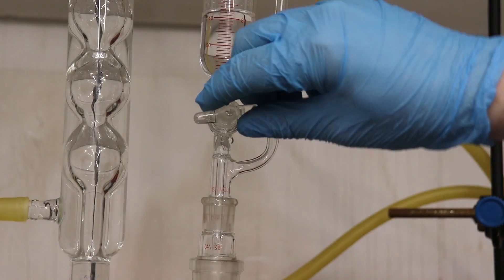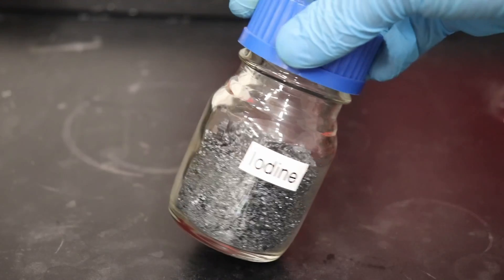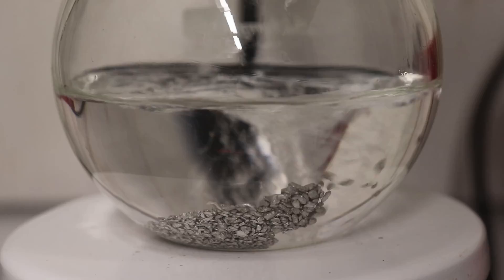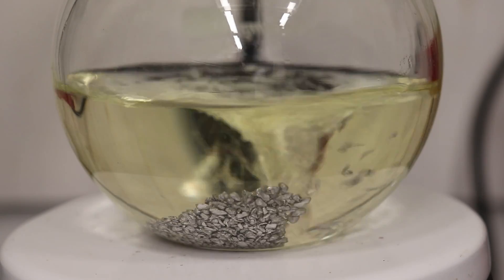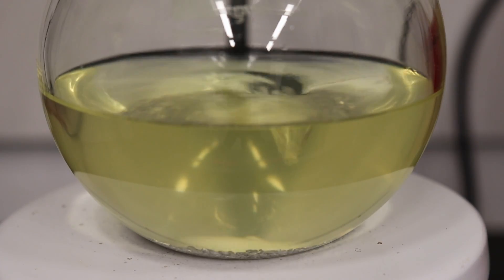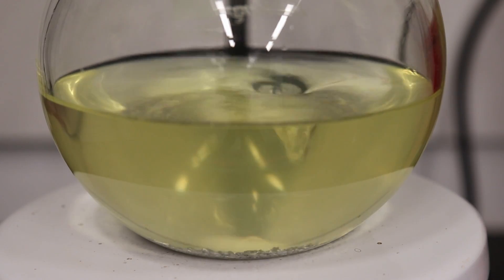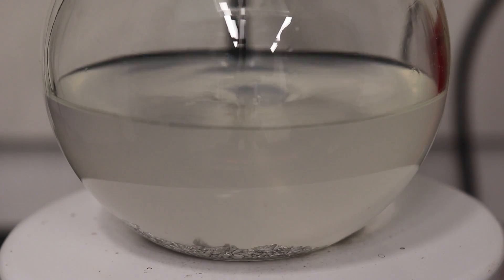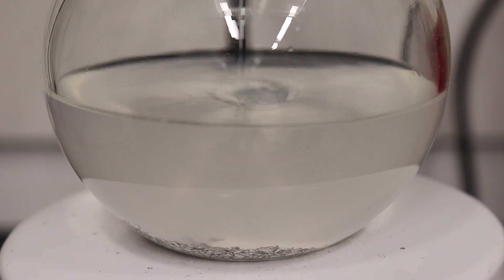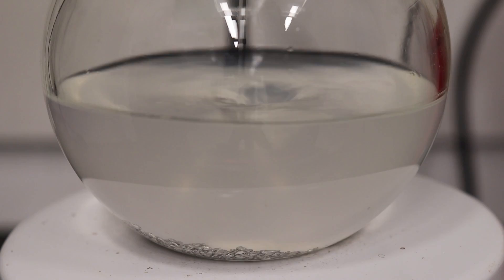The reaction still hasn't started after a few minutes, so I added a single small crystal of iodine down the condenser. The iodine should react with the magnesium oxide coating on the surface of the magnesium, exposing a fresh surface of magnesium metal for the bromobenzene to react at.